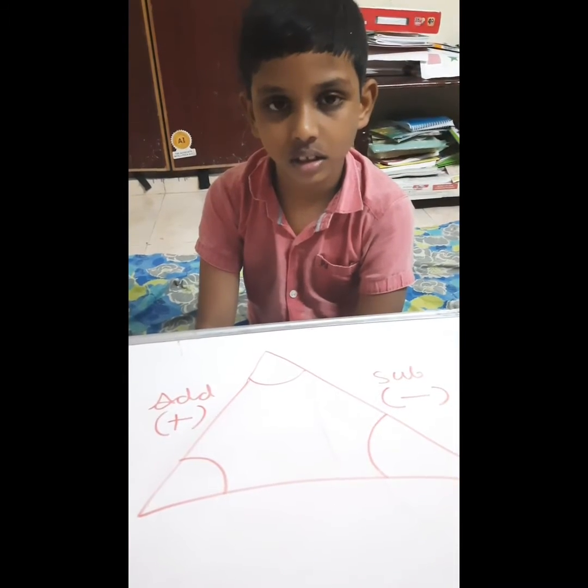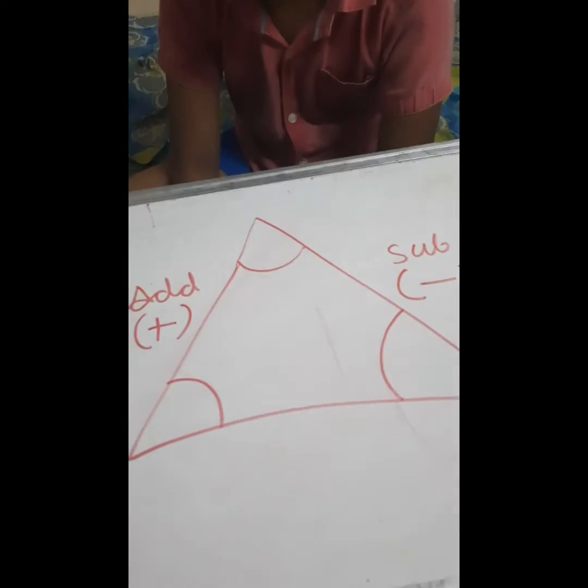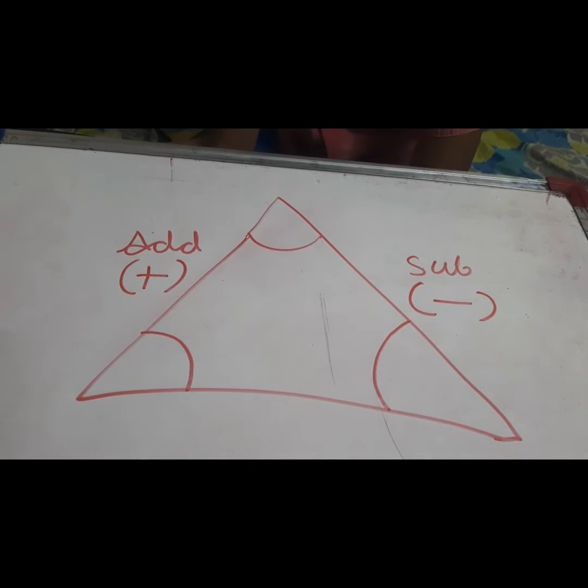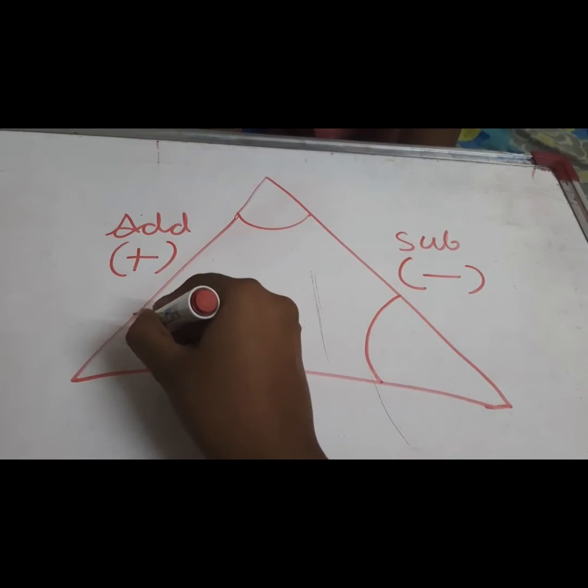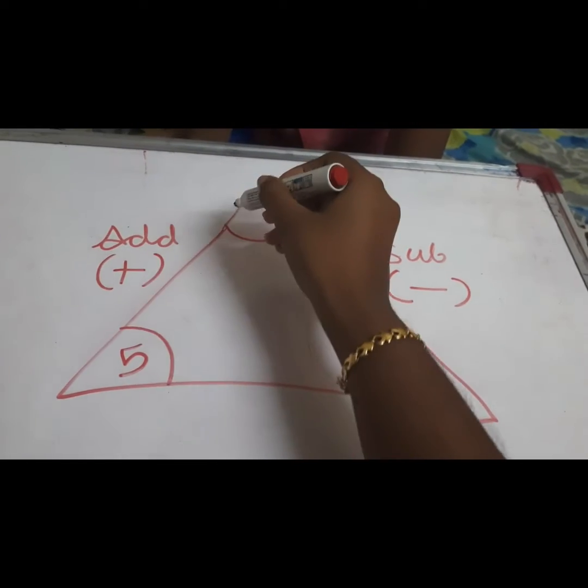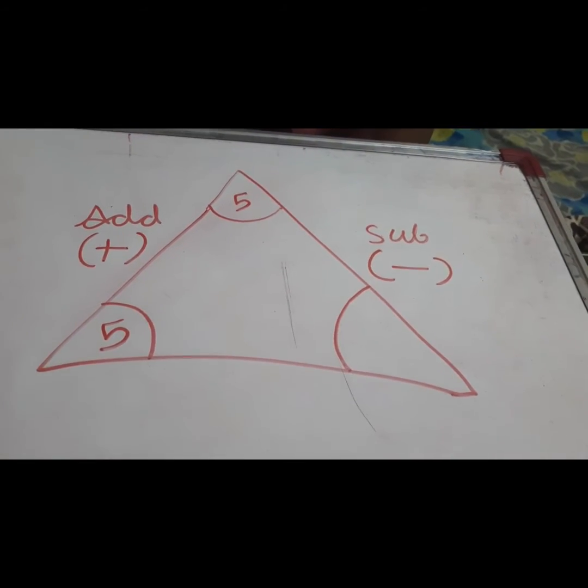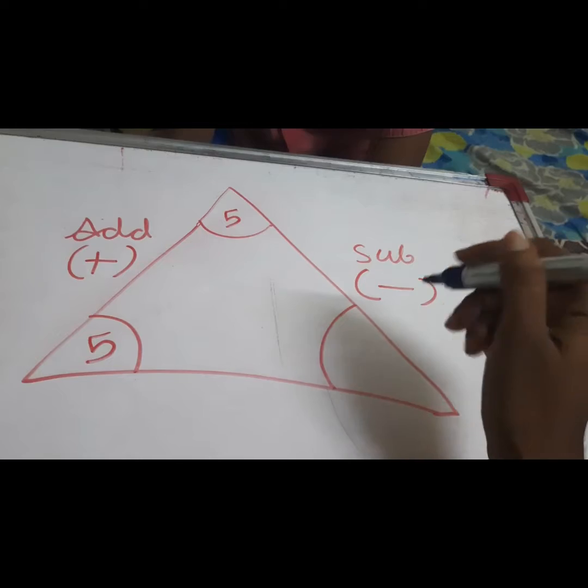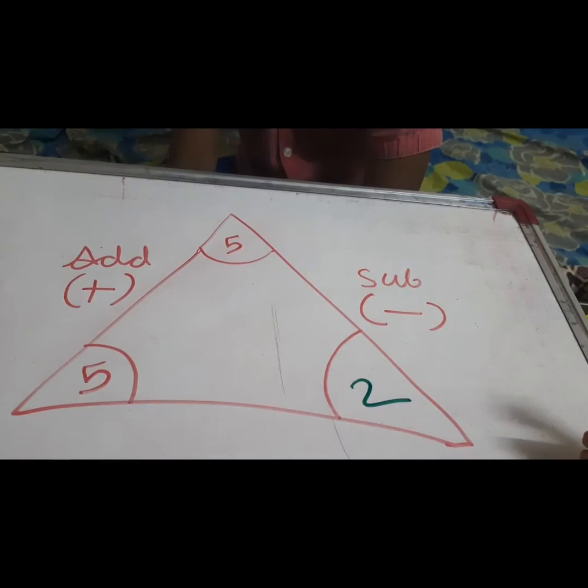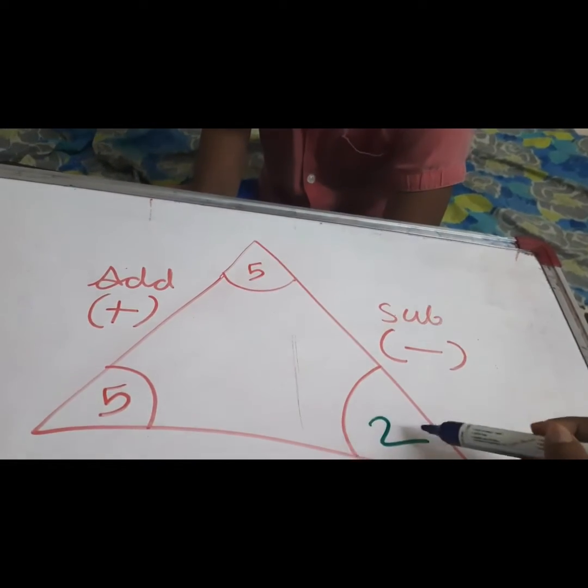Mind calculation. Okay, it's a triangle. This is a triangle I have drawn. So see, I am writing 5 plus 5, answer is 10. 5 minus 2, 3. So see, I have written 2.